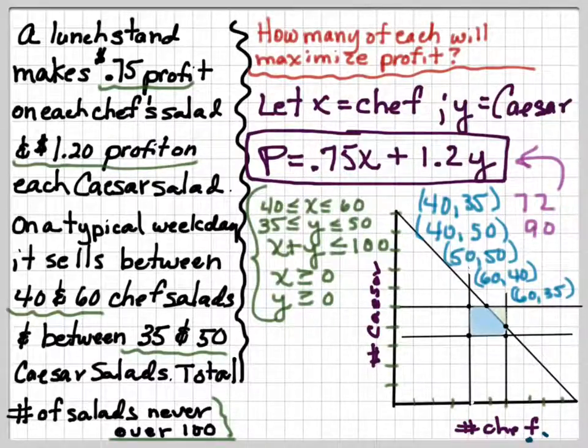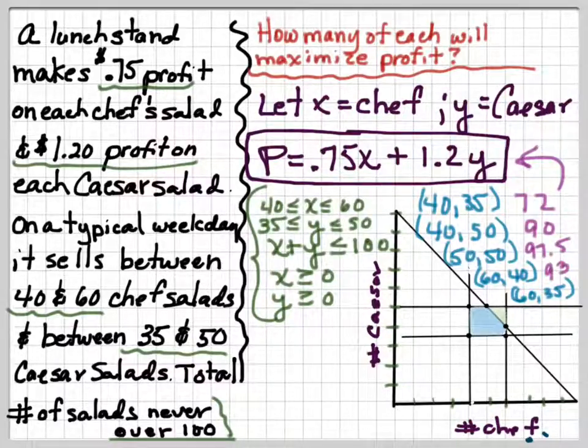For 50, 50 has a value of 97.5. For 60, 40 has a value of 93. And for 60, 35 has a value of 87.